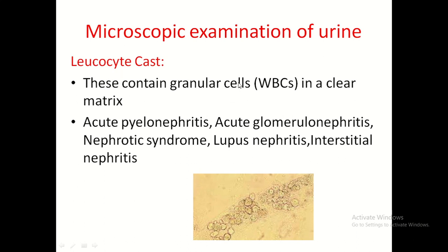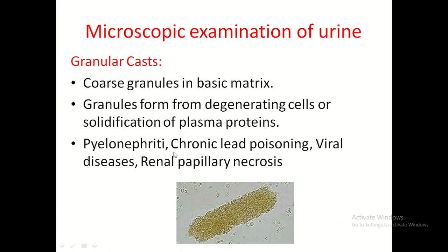Leucocyte or WBC casts contain granular WBCs in a clear matrix. Causes include acute pyelonephritis, glomerulonephritis, nephrotic syndrome, lupus nephritis, and interstitial nephritis — whenever there is inflammation or infection with excessive WBCs, they can form leucocyte casts. Granular casts contain coarse granules in a basic matrix, formed from degeneration of cells or solidification of plasma proteins. Causes include pyelonephritis, chronic lead poisoning, viral disease, and renal papillary necrosis.